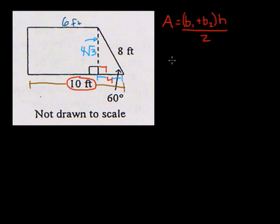So now we know that base 1, let's say, is at the bottom, is equal to 10. Base 2, which is on the top in this case, is equal to 6. And the height is equal to 4 radical 3.